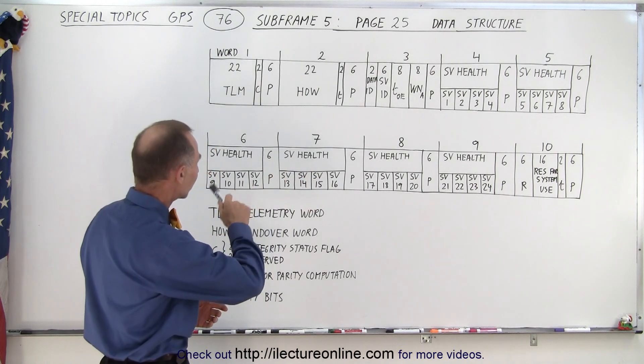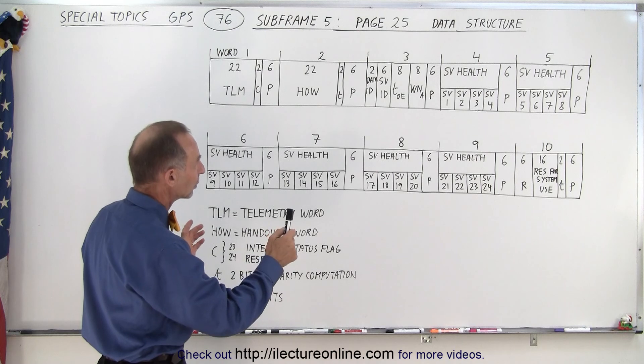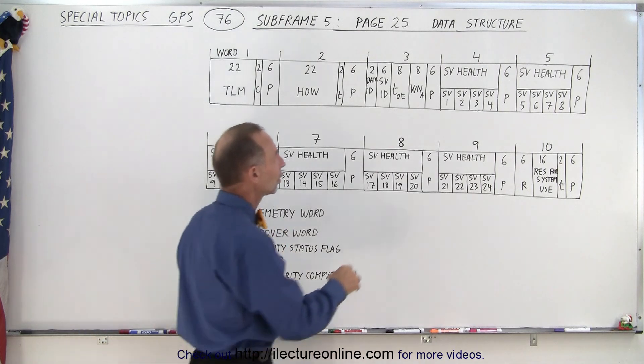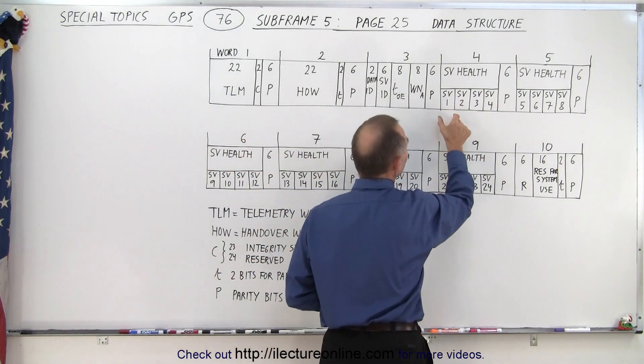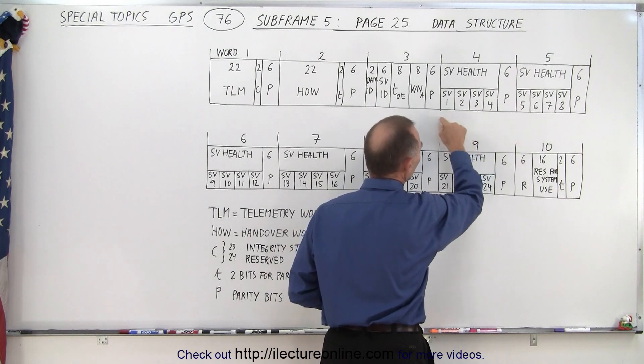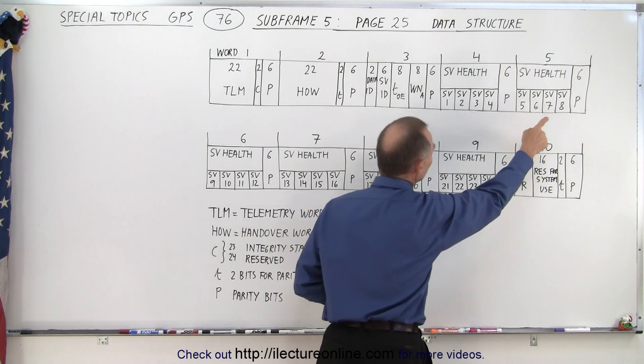Then we have words 4, 5, 6, 7, 8, and 9. They're all identical. Notice that each contains the SV health information in six bits for each SV, totaling 24 bits in each of those.